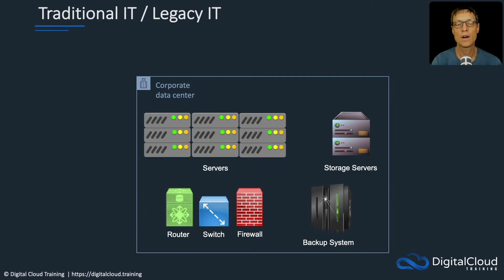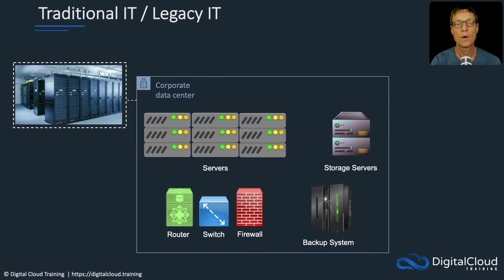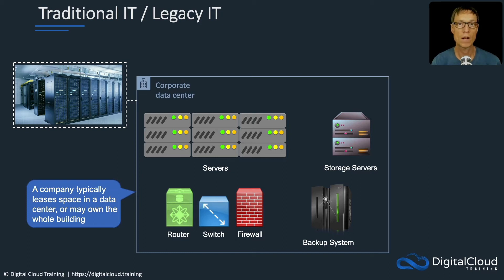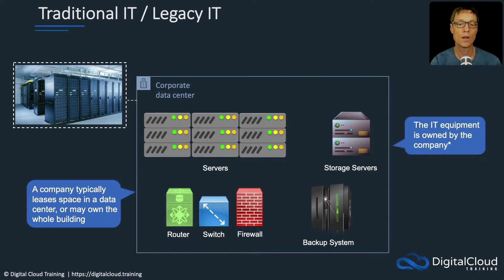In the traditional IT operating model, companies will often have a corporate data center. You may actually own this data center outright, or you may lease some space in somebody else's data center, also known as a co-location facility. Within that data center, you'll likely have lots of racks, just like we have in this graphic here. Those racks will then contain the servers, storage systems, routers, switches, firewalls, backup systems, and many more devices.